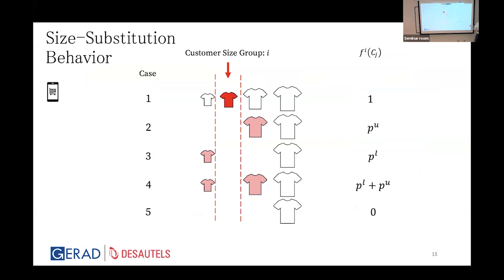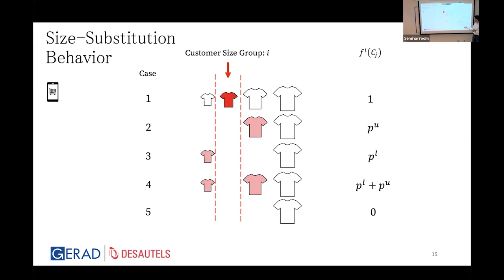There are five possibilities for FI(Cj). If the option is available in the customer's size, FI(Cj) equals one — all will purchase. If not, a fraction PU may buy one size larger; if that's also unavailable, some buy one size smaller; if neither neighboring size is available, a fraction PU plus PL will substitute. If none of the focal or neighboring sizes is available, no one buys.